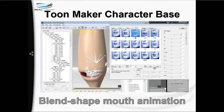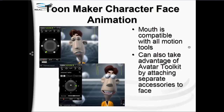For ToonMaker character bases, they have blend-shaped mouth animations. The bases don't have eyes, nose, or ears since those are all accessories, but they do have a mouth driven by blend shapes. Blend-shaped mouth animation is a lot smoother and more expressive, with a smoother transition between mouth shapes compared to bone-driven facial animation. The mouth is compatible with all motion tools, including the facial puppet tool, lip syncing, and you can also take advantage of the Avatar Toolkit by attaching separate accessories like ears, nose, eyes, and eyebrows to the face.